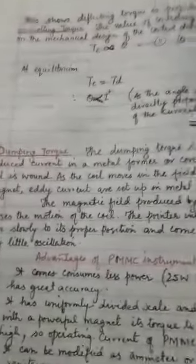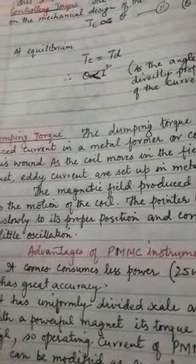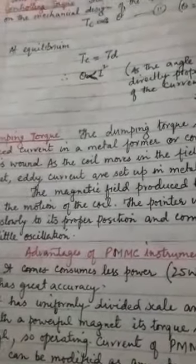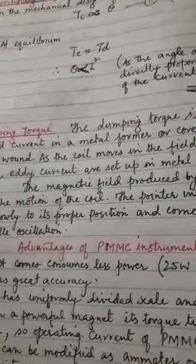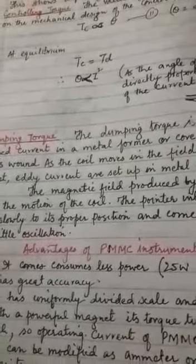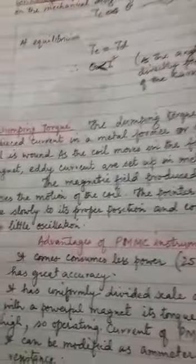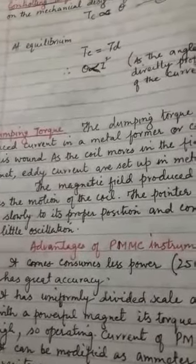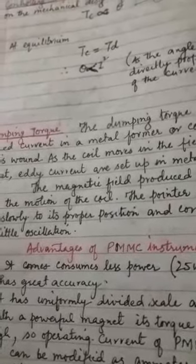Today we will revise by discussing its advantages and disadvantages. The first advantage is that the PMMC instrument consumes less power. It is much more accurate than any other instrument and gives very accurate readings.